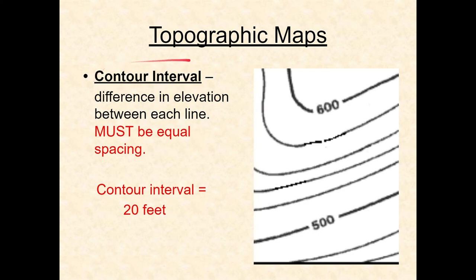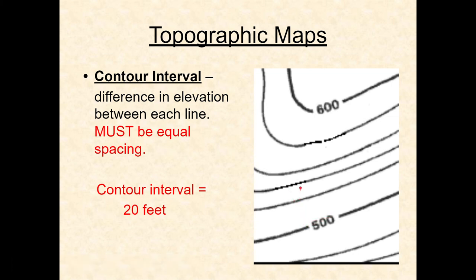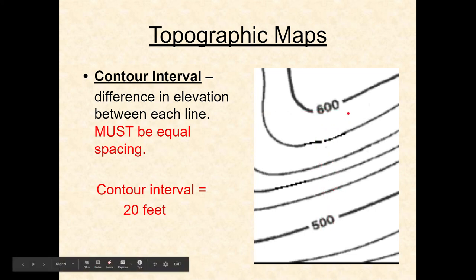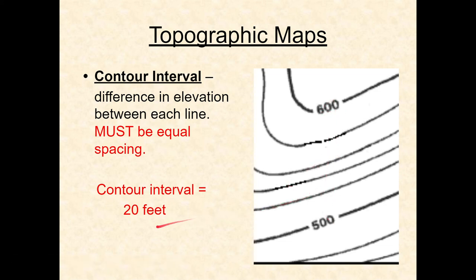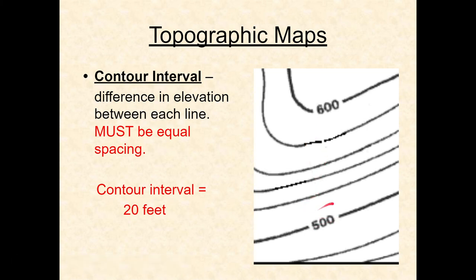Along with contour lines, we have the contour interval, which is the difference in elevation between each line. On this topo map the contour interval is 20 feet, so between every line is 20 feet: 500, 520, 540, 560, 580, 600 feet. If the contour interval were 10 feet instead of 20, you'd have double the number of lines.